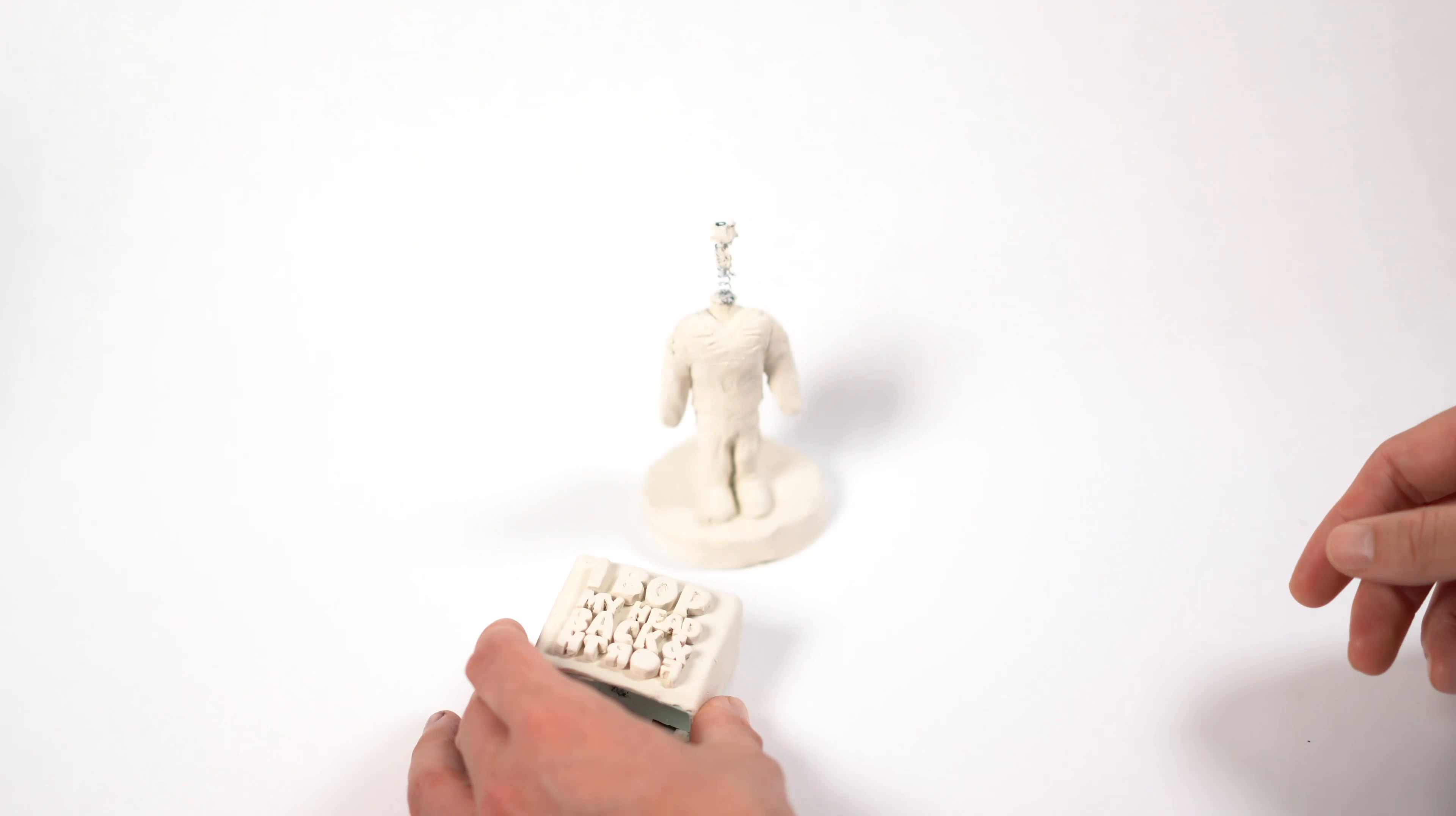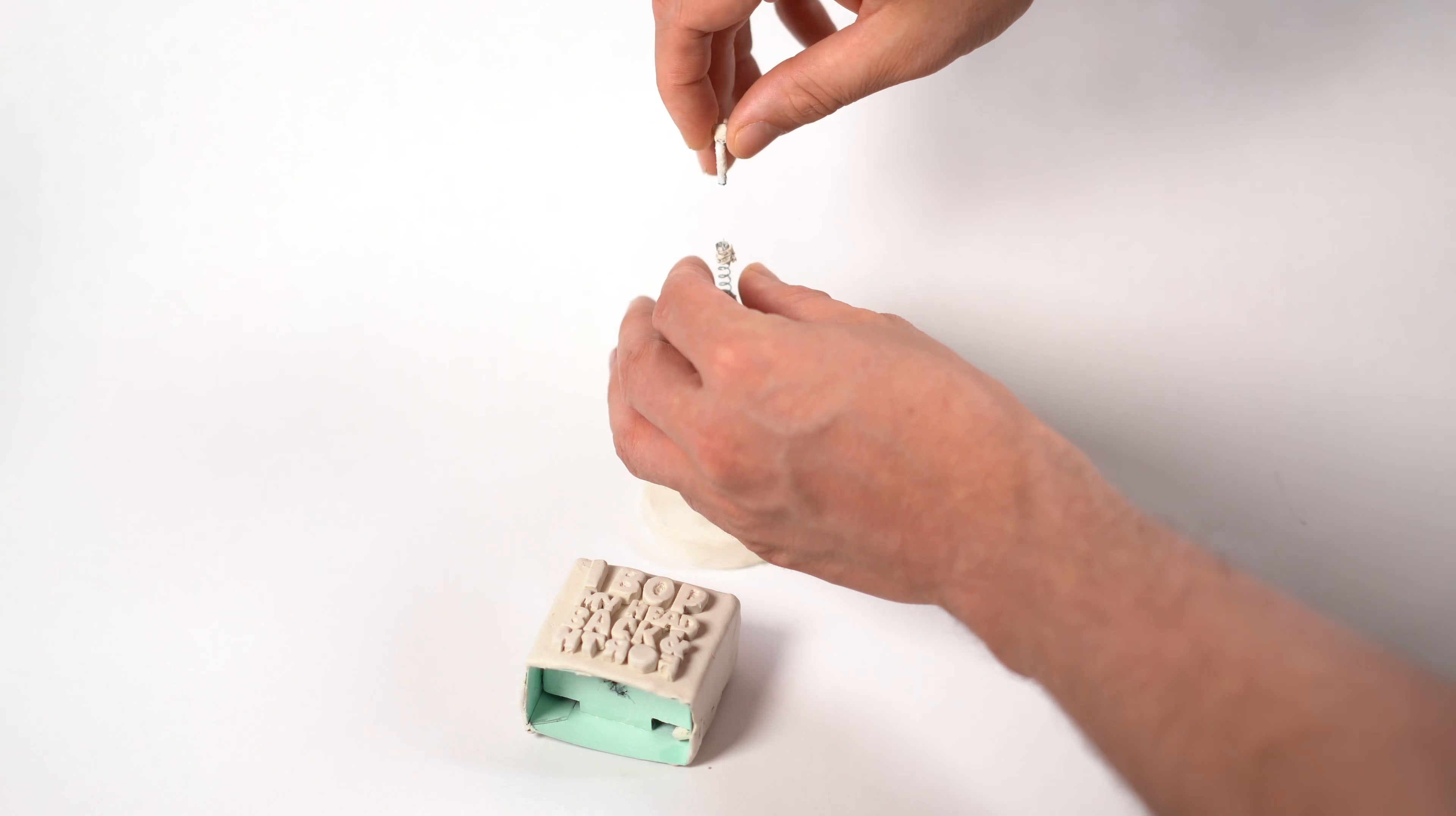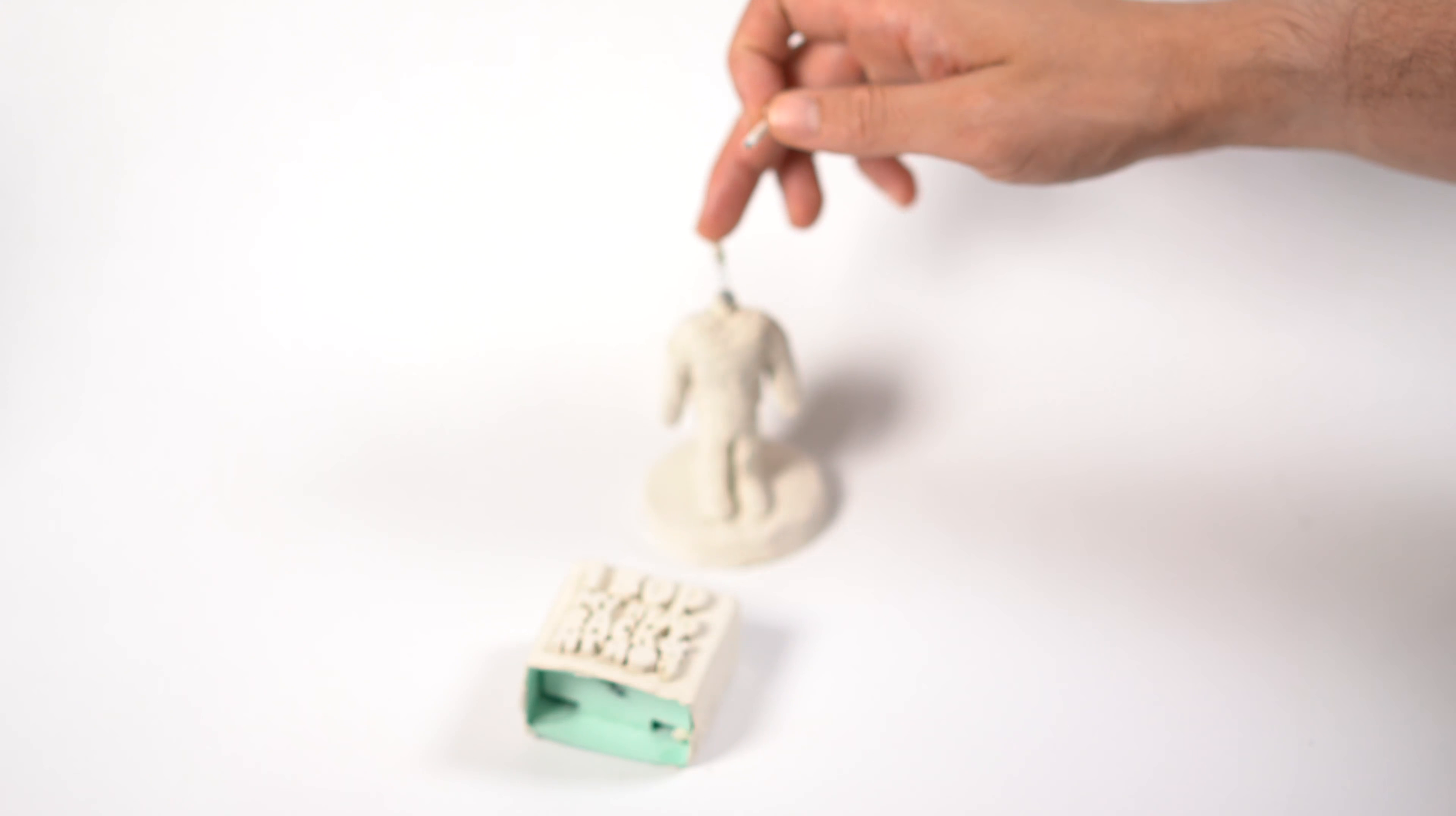So let's leave that on the side for a minute, and let's get to the body. So the body on the top, this is a spring taken out of a pen.